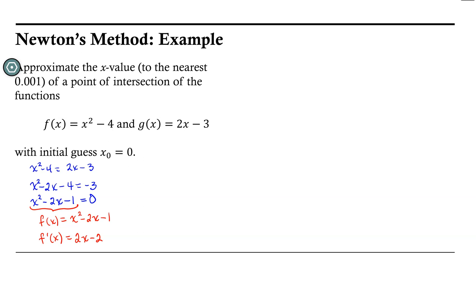So let's set up a table to organize the information and determine the approximate value of the point of intersection. Our first column will be the iteration n. Next we will keep track of the approximation at that iteration xₙ. Next we'll need to keep track of the function value at that approximation f(xₙ), and then the derivative f'(xₙ).